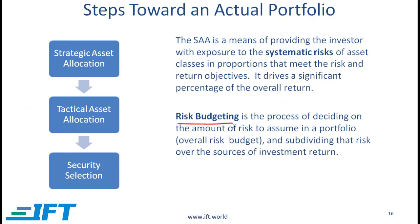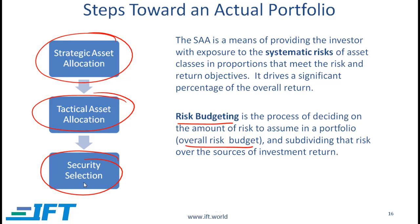Another concept introduced here but discussed in more detail at Level 3 is risk budgeting. Risk budgeting is the process of deciding on the overall amount of risk to assume in a portfolio, and then how that risk is distributed across the different sources of investment return — strategic asset allocation, tactical allocation, and security selection. How we divide the risk across these different sources of return is part of risk budgeting.